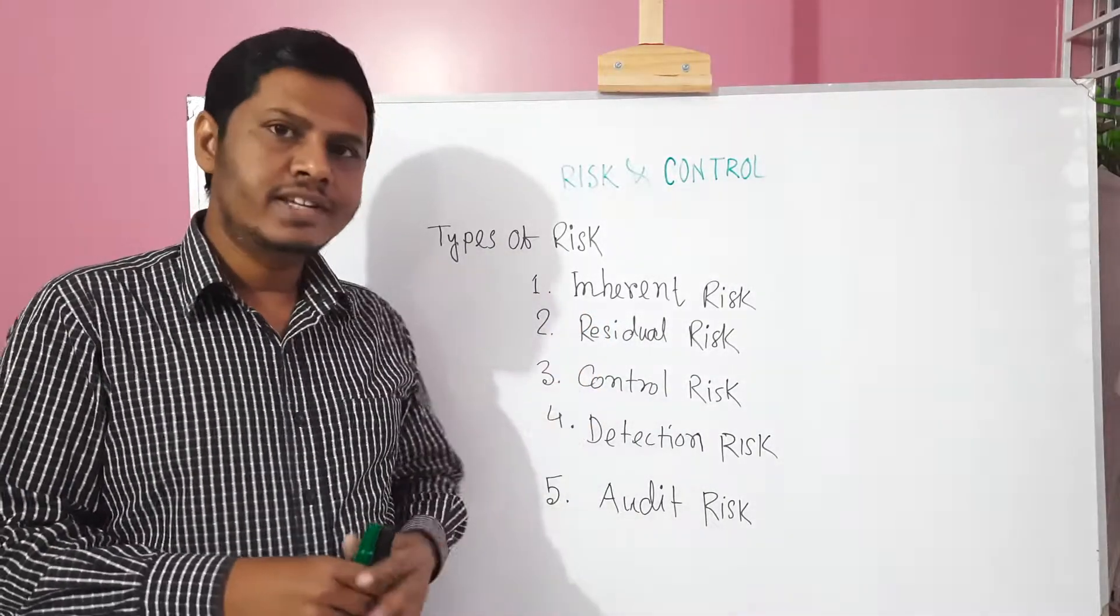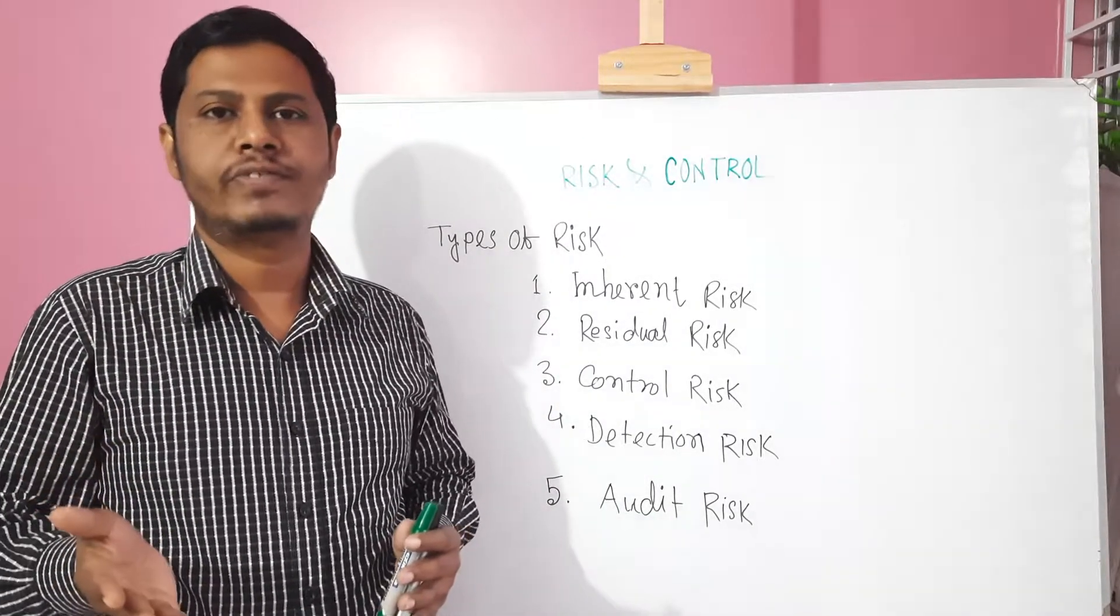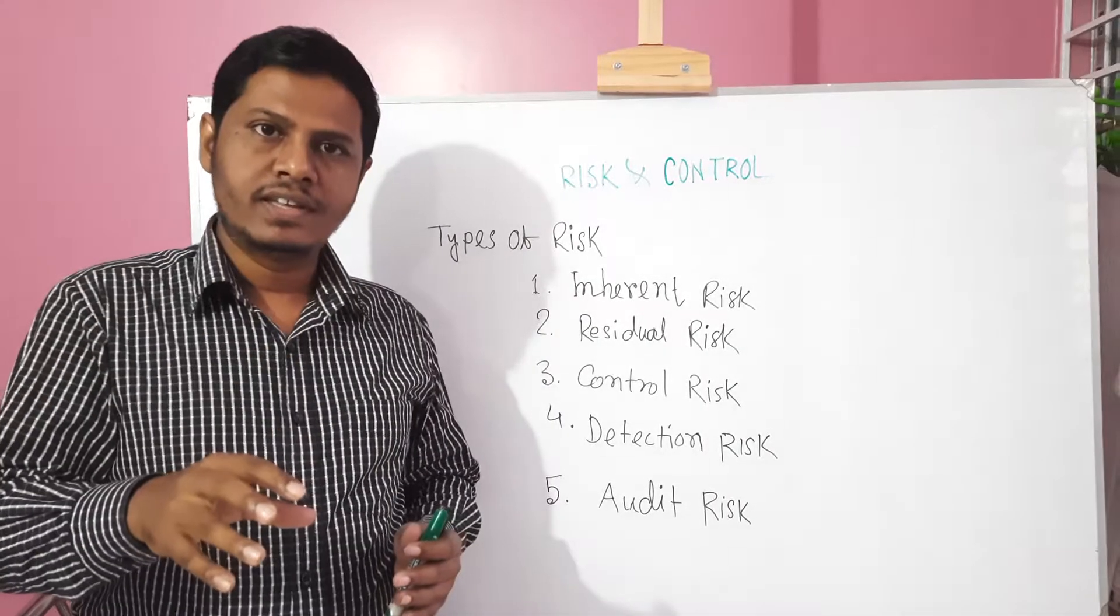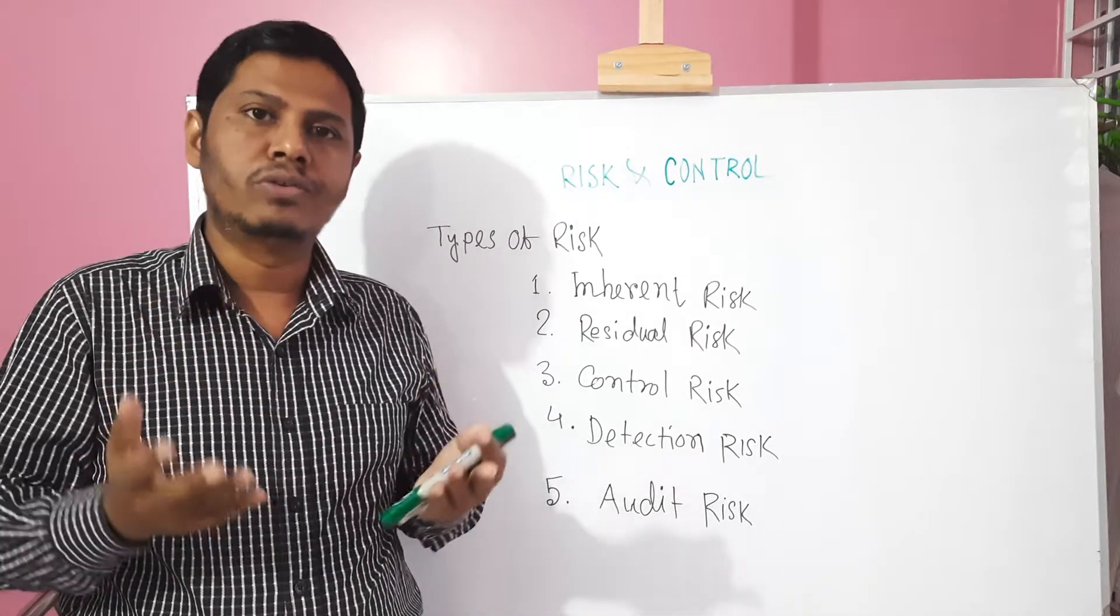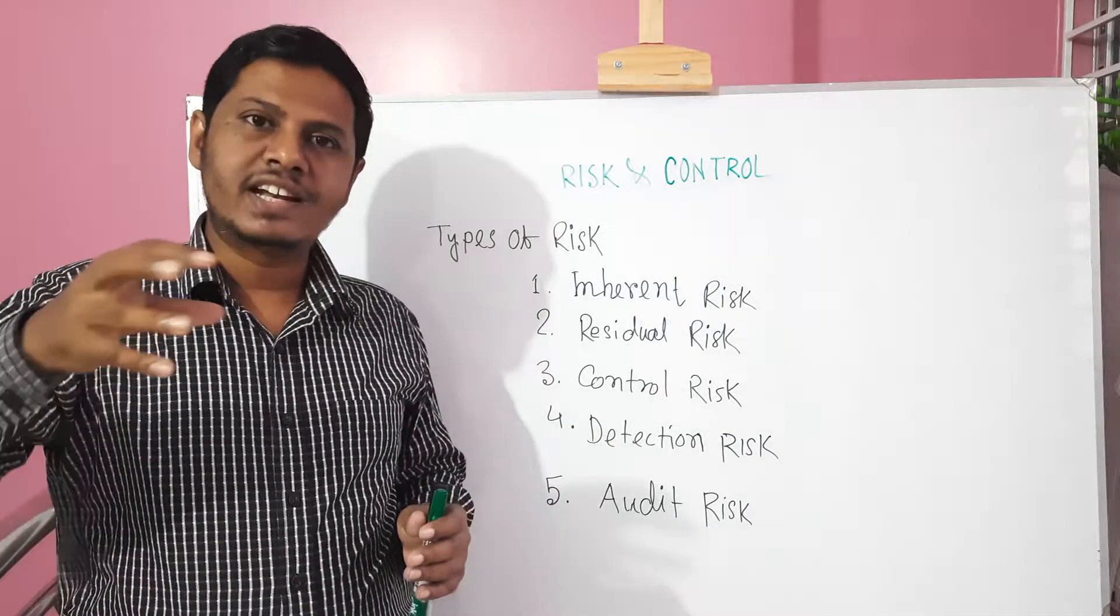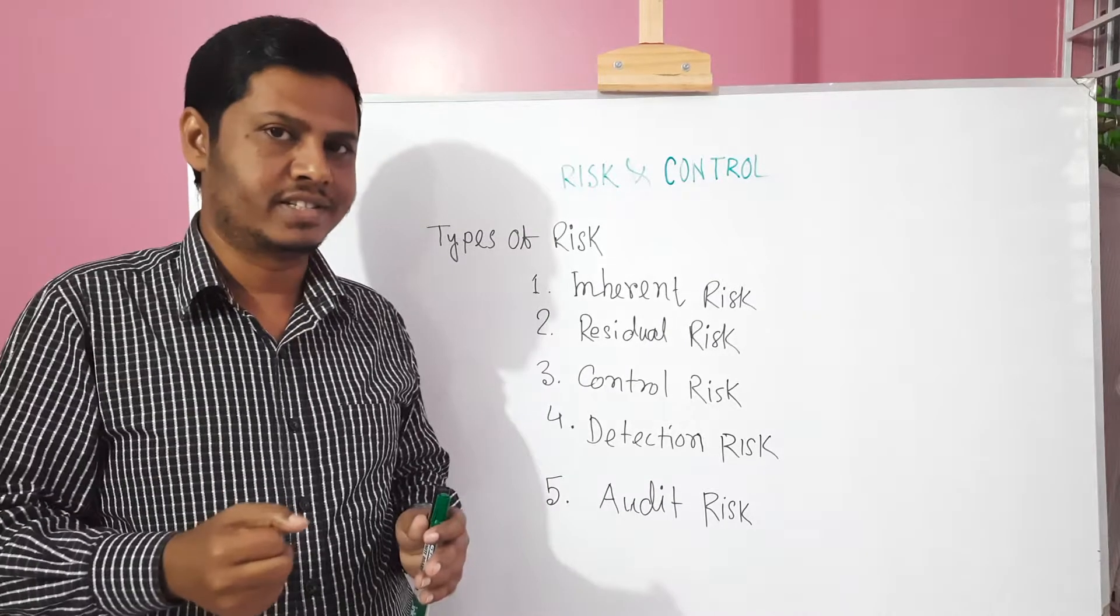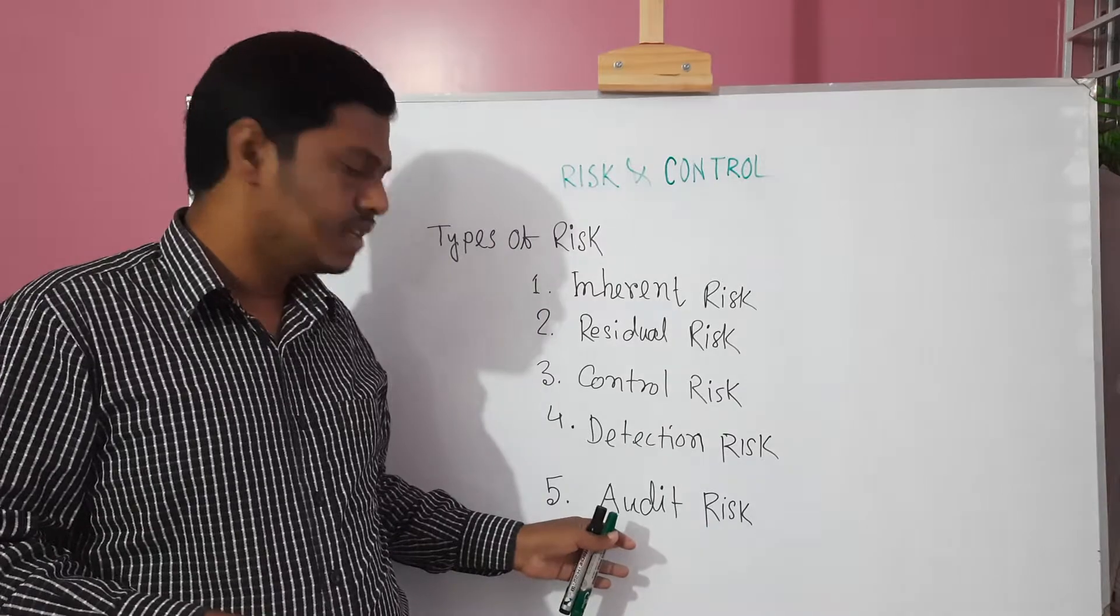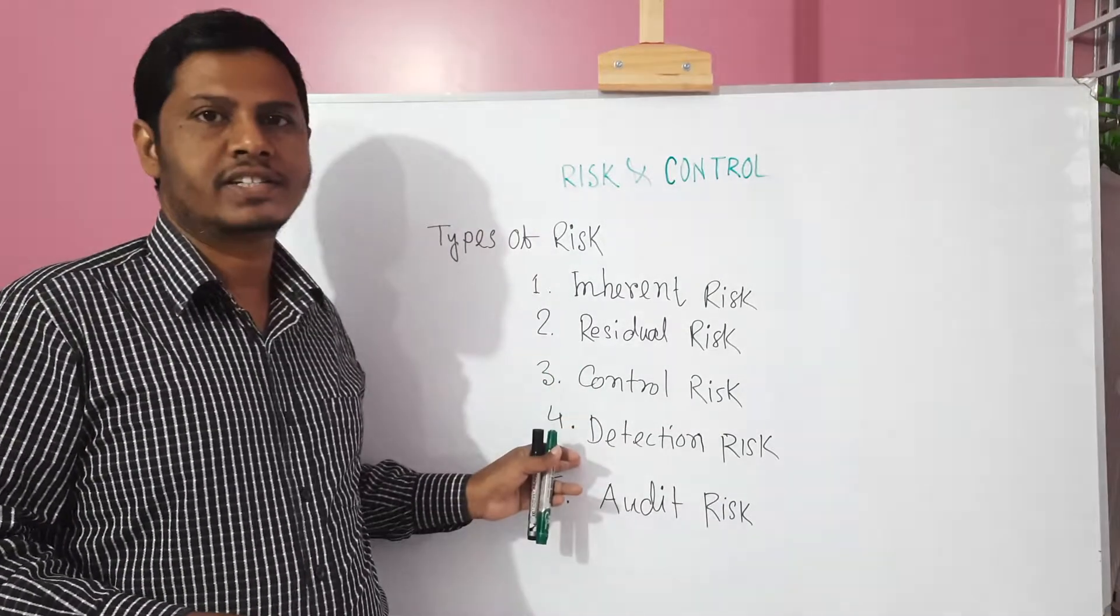And residual risk is that risk that exists after implementation of risk controls. Control risk is that risk that exists for internal control failure. And detection risk is that risk that exists due to audit risk. And finally, audit risk is the product of inherent risk, control risk, and detection risk.